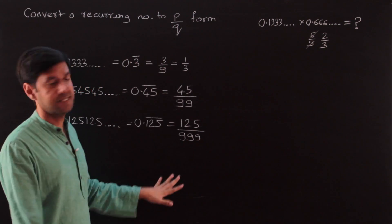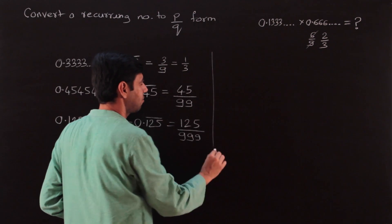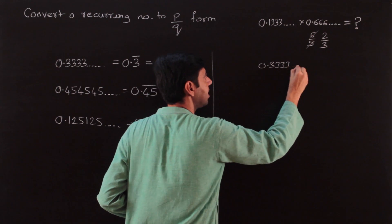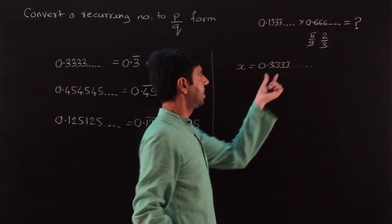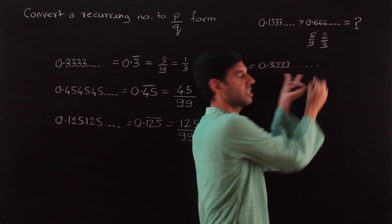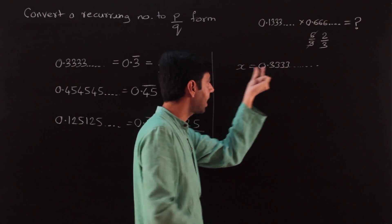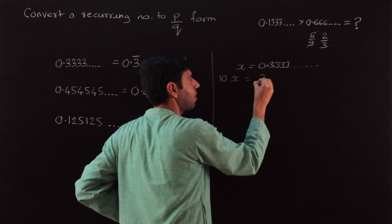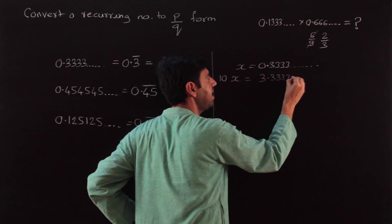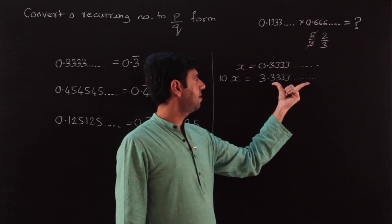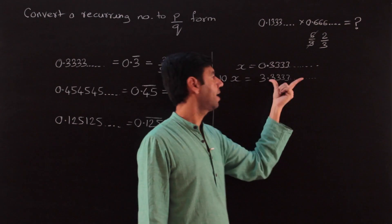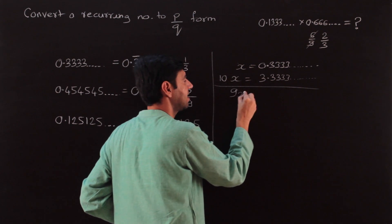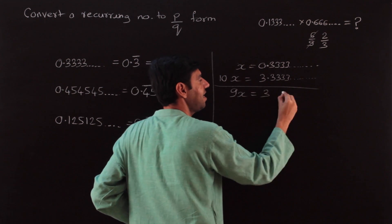Two things remain: first, why does this work? It's not a good idea to just memorize it. If I represent 0.3333... indefinitely as x, the part going on indefinitely is the problem. I take one unit before the decimal by multiplying both sides by 10, getting 10x = 3.3333... The decimal parts of both are identical, so I subtract: 10x minus x is 9x, and 3.333... minus 0.333... leaves 3. So 9x = 3, giving x = 3/9 = 1/3.